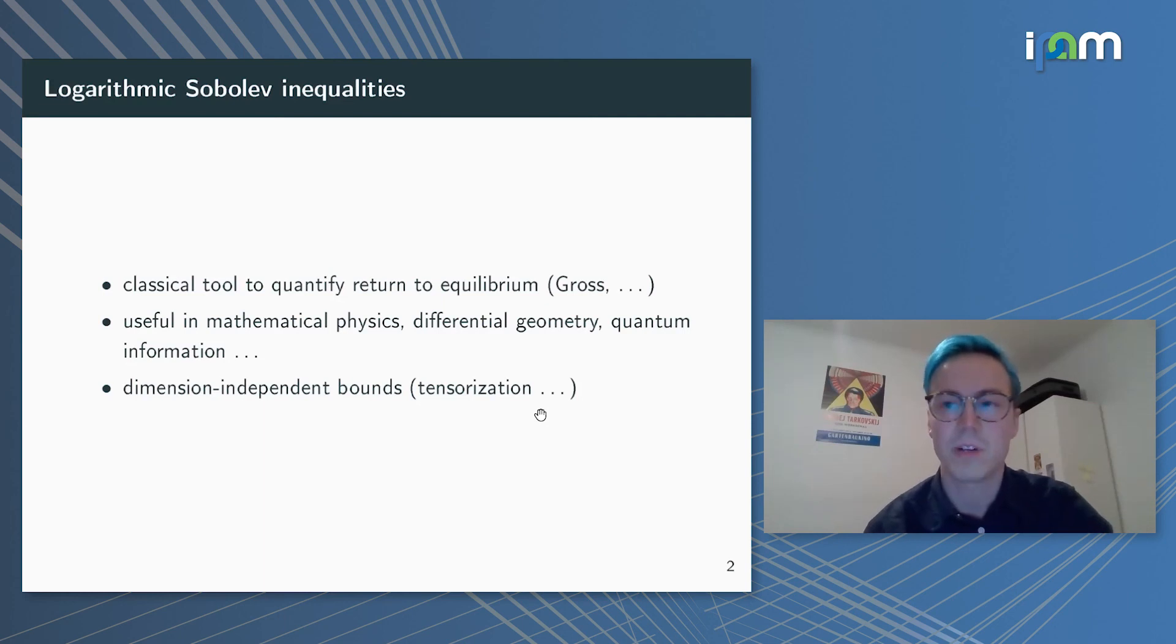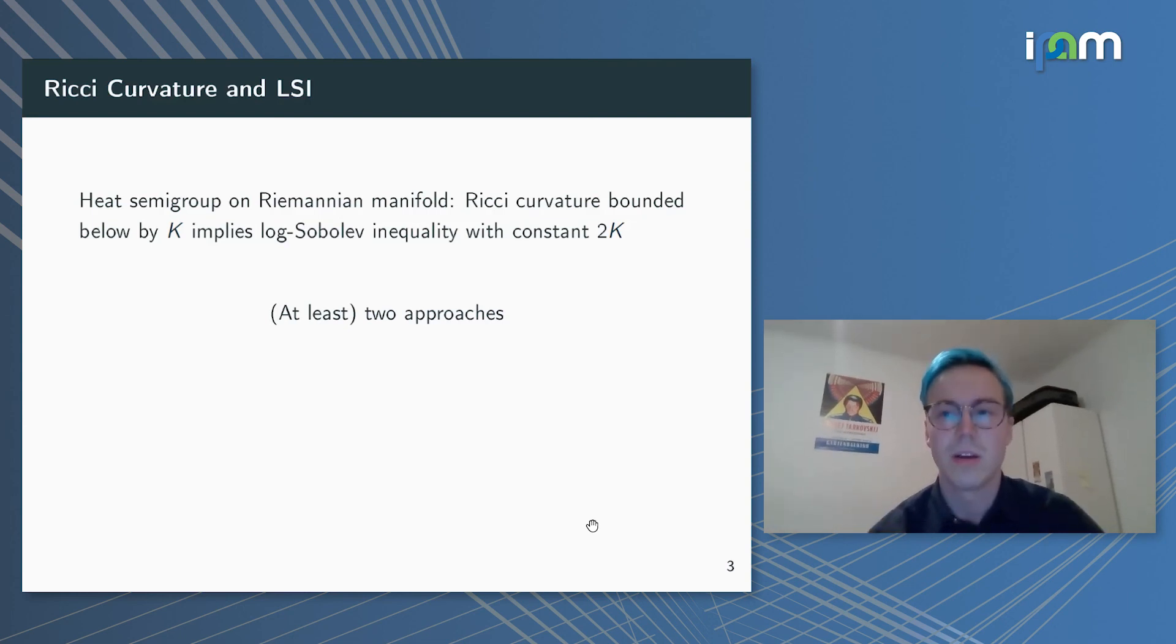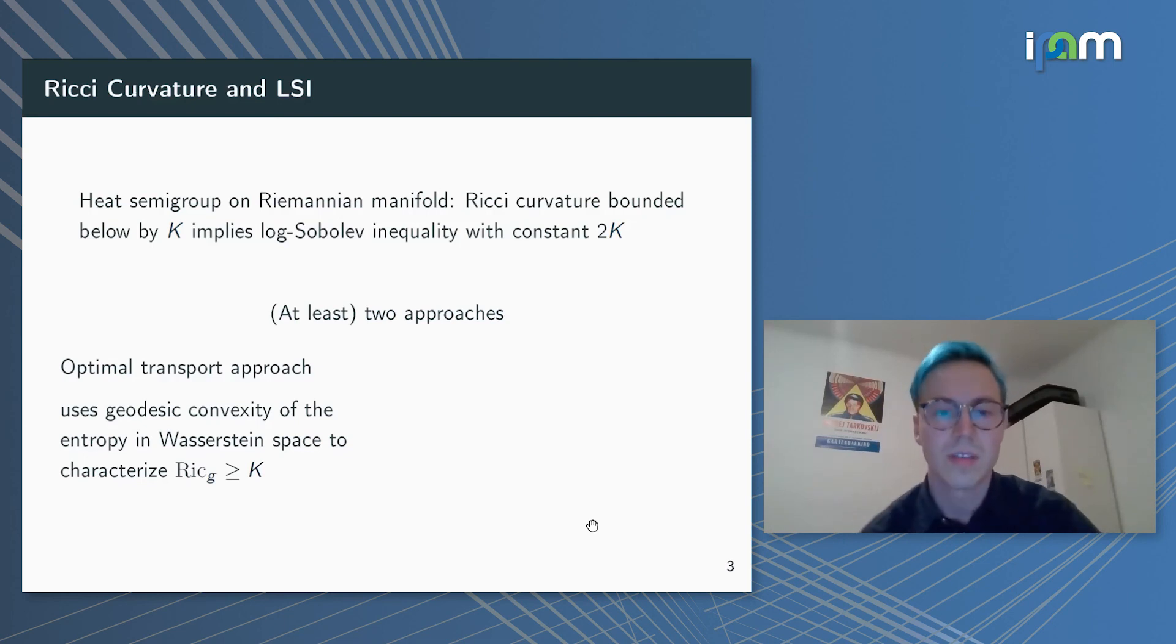Before I cut to quantum information, let me focus on the differential geometry part here in the realm of classical mathematics or physics, which is the connection between logarithmic Sobolev inequalities and Ricci curvature bounds. That's a rather classical result: if you have a Riemannian manifold, let's say complete, then the heat semigroup satisfies the logarithmic Sobolev inequality with constant 2k if the Ricci curvature of the manifold is bounded below by k.